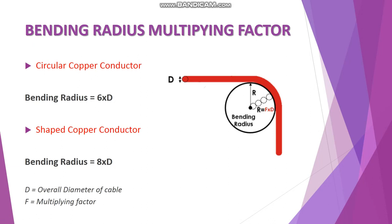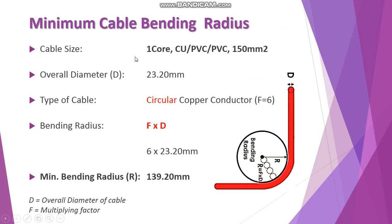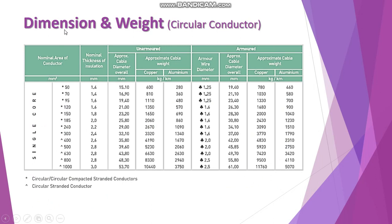Let's look at an example to make things simpler. To calculate the minimum cable bending radius, we first define which size of cable we are going to install. Here we take the example of a single-core circular copper PVC/PVC 150 mm² cable. The overall diameter of this cable is 23.20 mm — this value is derived from the dimension and weight table for circular copper conductor single-core cables. For the 150 mm² unarmed cable, the overall approximate diameter is 23.20 mm.